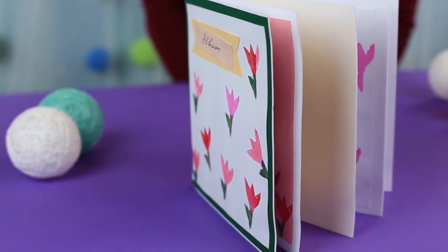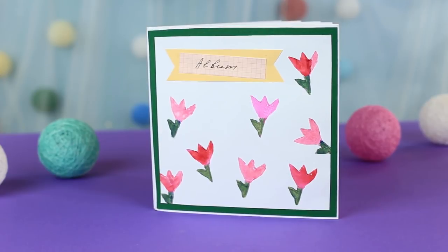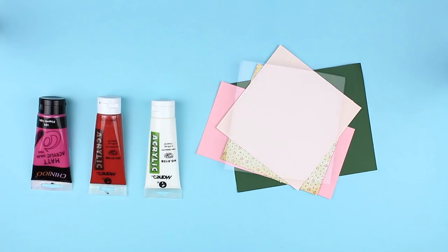In this project, we'll show a simple DIY way of making stamps and decorate the scrapbook with the stamped paper. We'll need color paper, patterned paper, acrylic paints, white cardboard, and a potato.